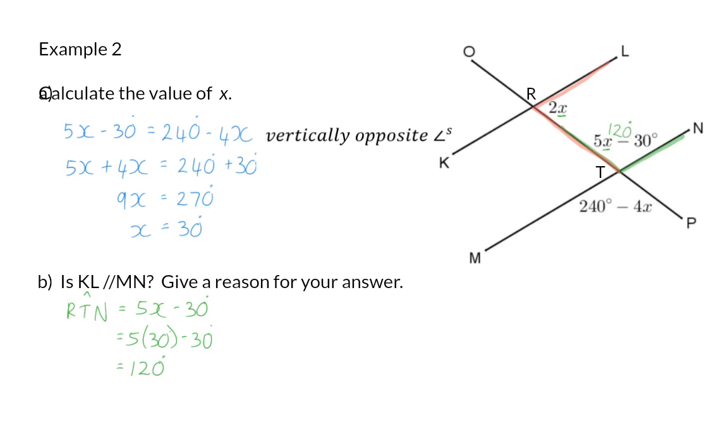Similarly, I can calculate the size of LRT, which was given as 2x. We now know that that is then 2 times 30, so the angle has a size of 60 degrees. We have just calculated the size of these two angles without using parallel lines. But, if we now go and have a look at these two angles, which also form co-interior angles, we can see that they do add up to 180 degrees. That means that the two lines have to be parallel.